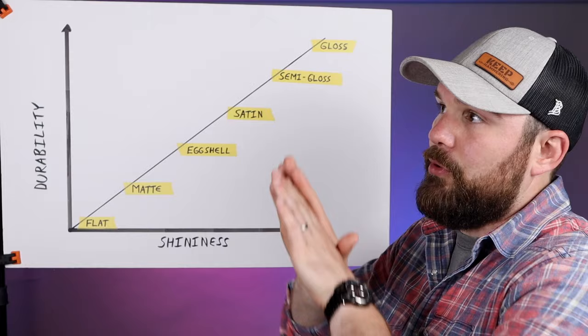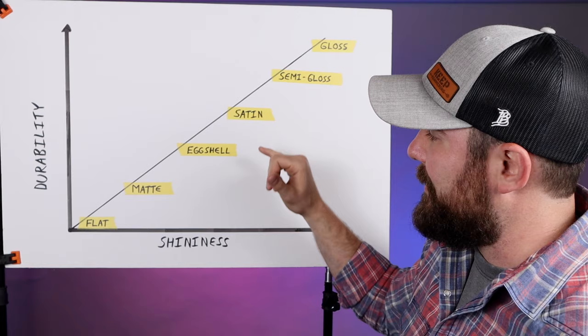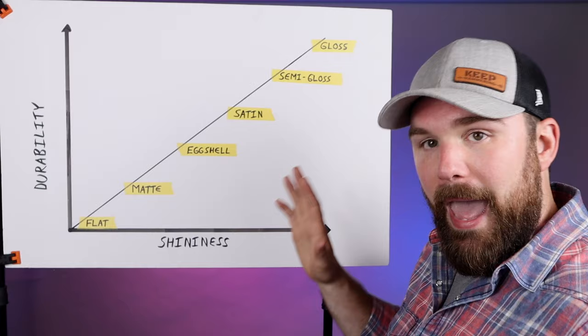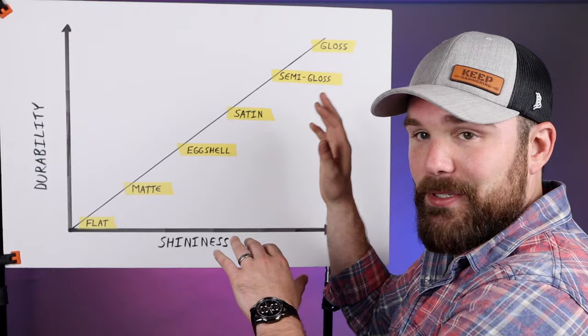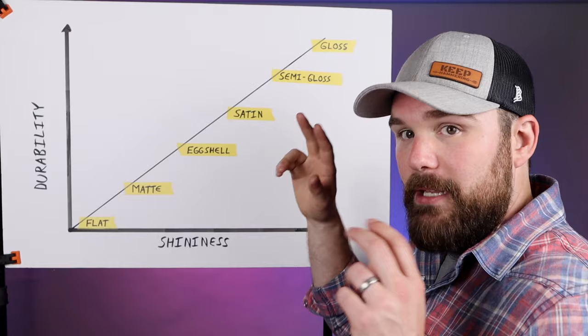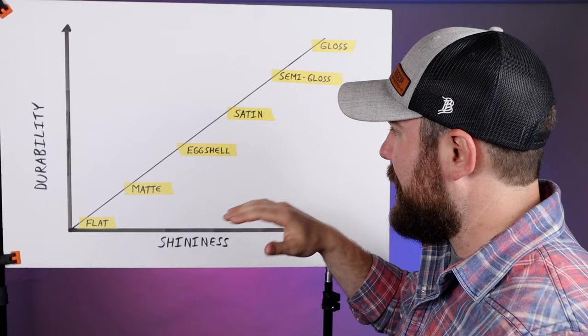Next up is eggshell, which is obviously slightly shinier than matte. I would say the battle for the most common finish on a wall is between eggshell and matte. Some people really like eggshell and some people really like matte. Keep in mind these are not universal terms, so a matte paint from Sherwin-Williams might be equivalent in sheen to a Benjamin Moore eggshell.